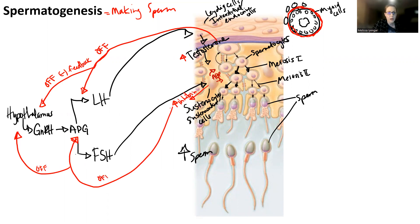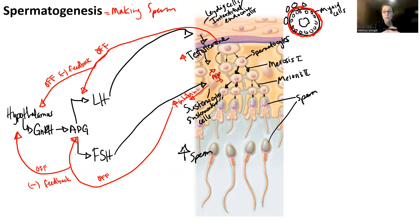There are two things that help you turn off the system and decrease sperm production: both testosterone levels being high and inhibin levels being high. This is part of the reason why testosterone is not really given to men as a birth control measure, because testosterone levels have to be really high and it has secondary effects like behavioral effects.